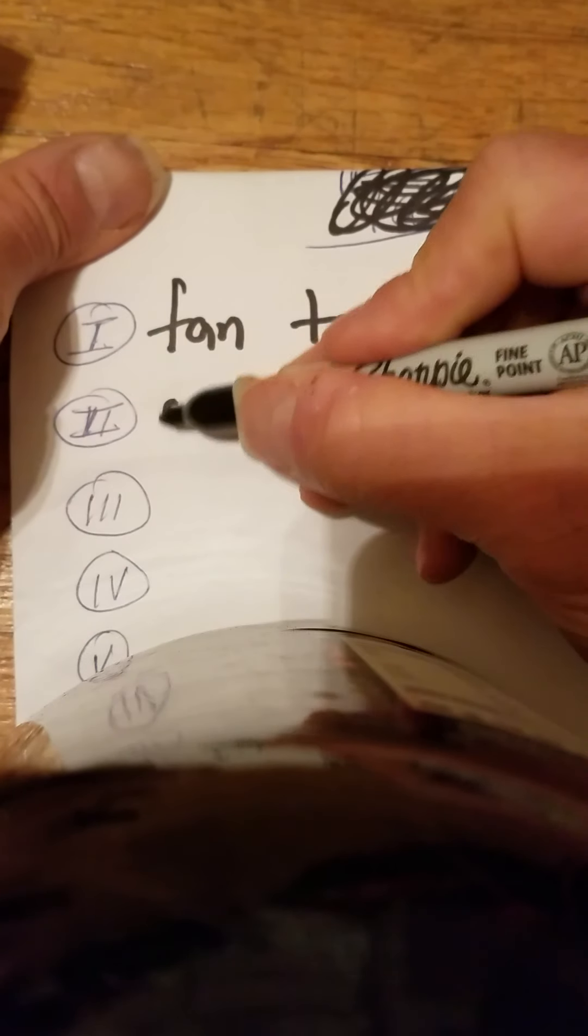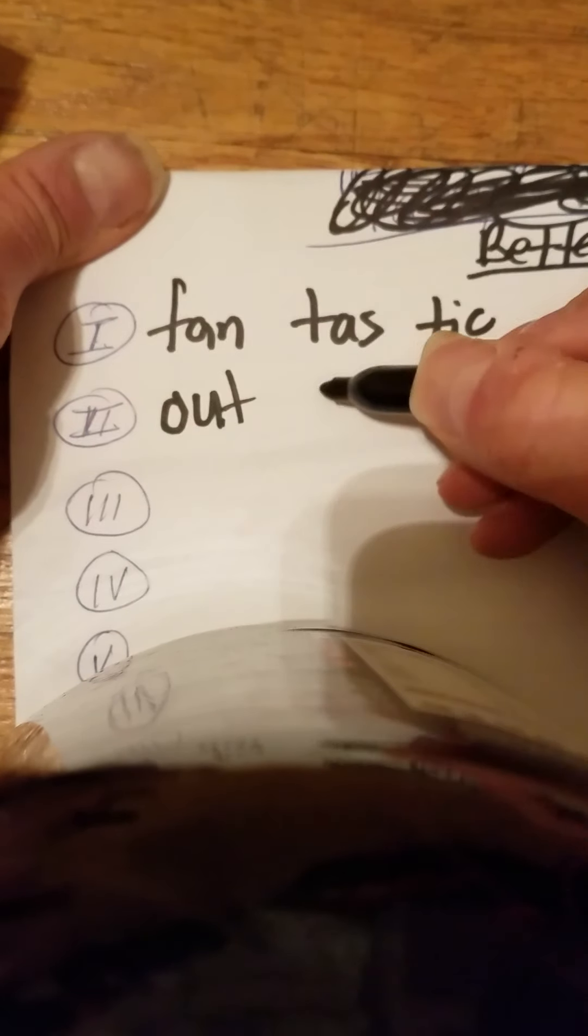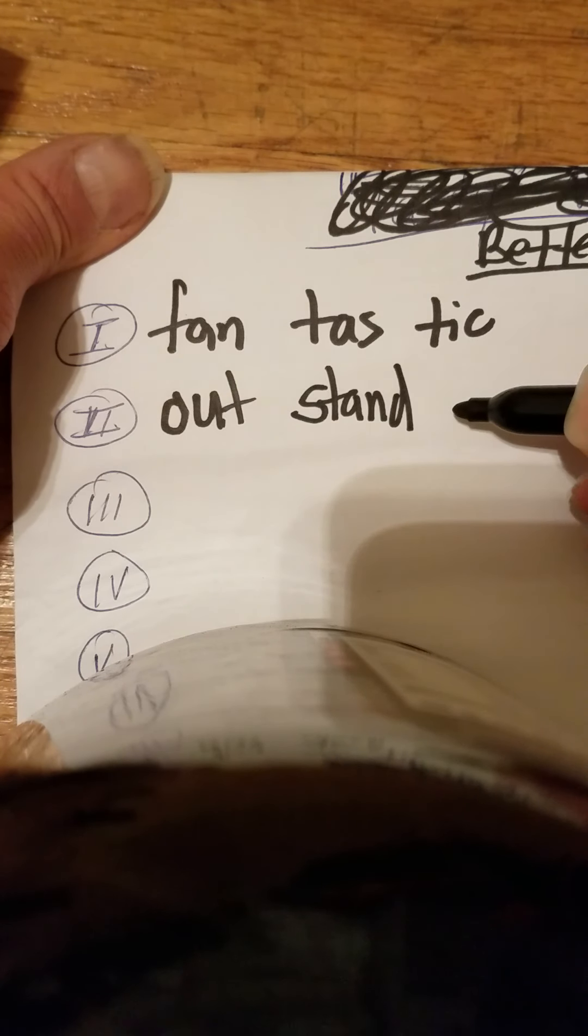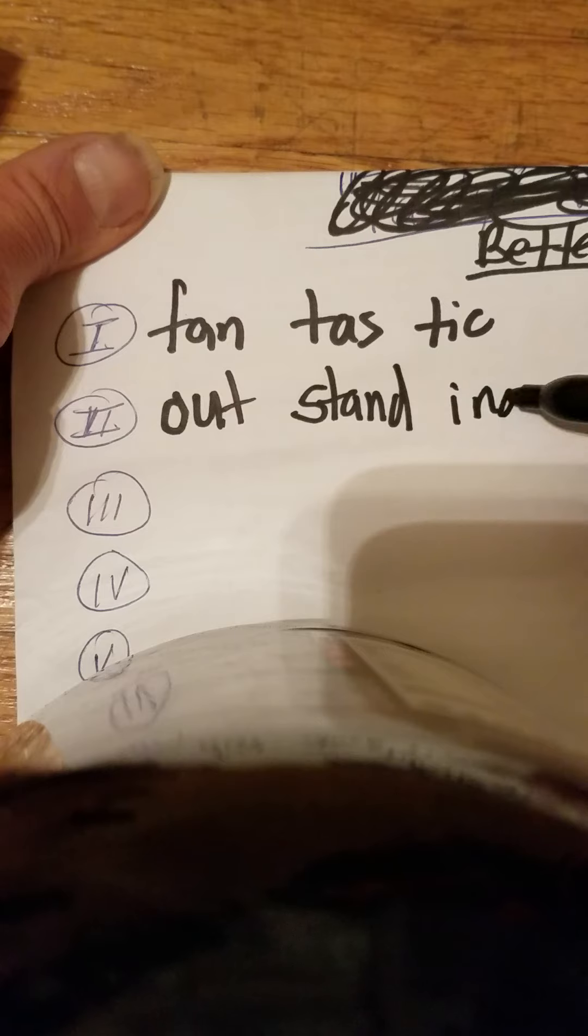Getting back to the word 'outstanding.' Let's go. Out-stand-ing. Outstanding. So let's go in three syllables. First syllable: out. Second syllable: stand. Third syllable: -ing.